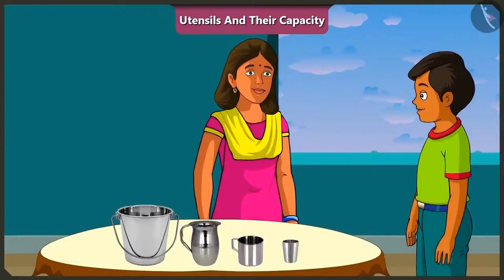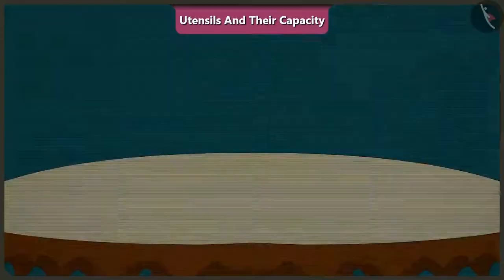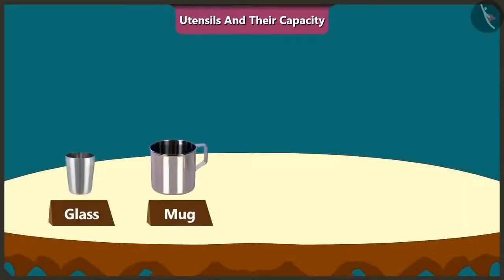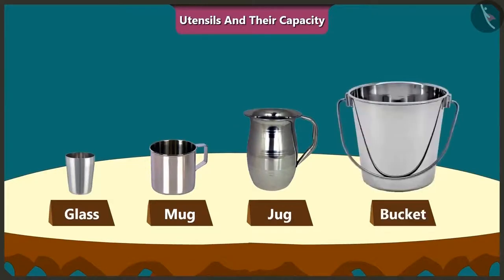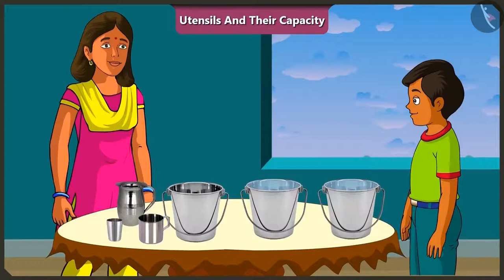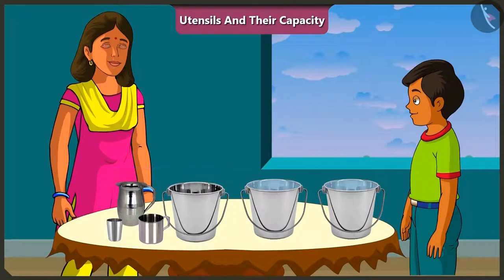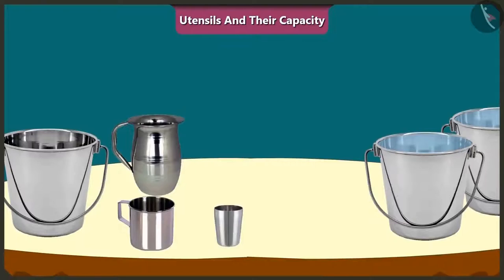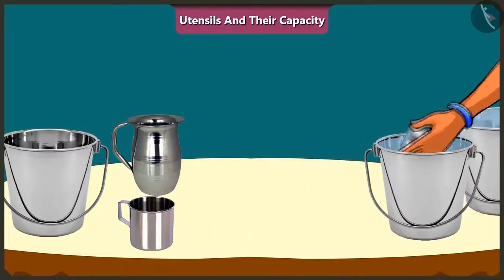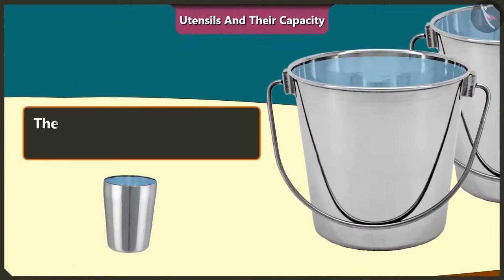Which vessels and their capacities are we going to find today? Today we will find the capacity of this glass, mug, jug and this bucket. Mummy, what are these two buckets of water for? We will use this water to find the capacity of all these vessels. First of all, I will fill this glass completely with water. The amount of water in this glass is its capacity.